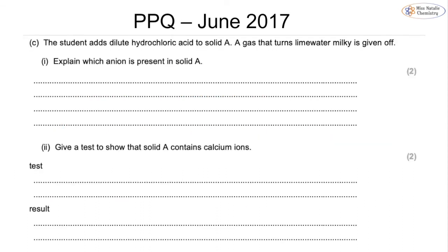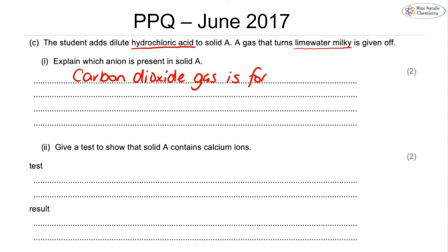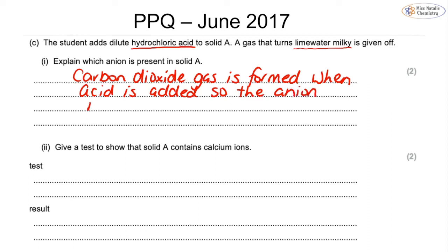When dilute hydrochloric acid is added to solid A and the gas produced turns lime water milky, this tells us that carbon dioxide gas is formed when the acid is added. Therefore the anion must be a carbonate, CO3 2−. You don't have to include the formula but it is good practice. Because carbon dioxide is given off from the solid, it confirms the presence of a carbonate.